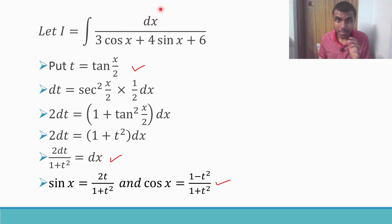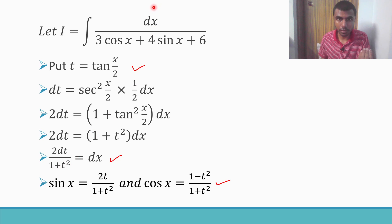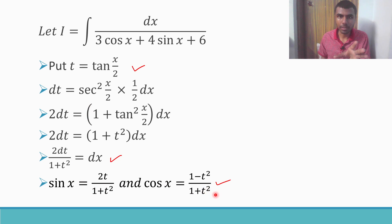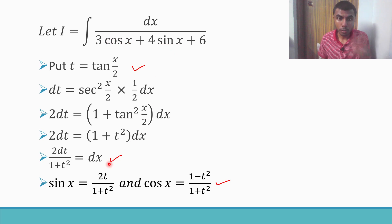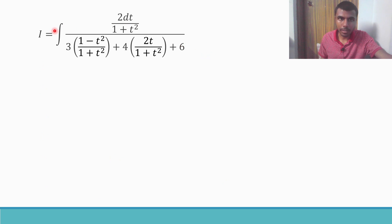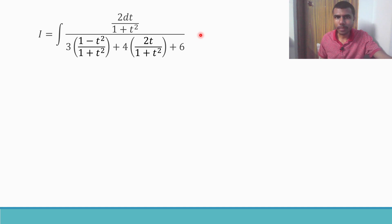Now let's substitute into the actual question. dx = 2dt/(1 + t²). cosx = (1 − t²)/(1 + t²), so 3cosx = 3(1 − t²)/(1 + t²). sinx = 2t/(1 + t²), so 4sinx = 8t/(1 + t²). So I becomes the integral of [2dt/(1 + t²)] divided by [3(1 − t²)/(1 + t²) + 8t/(1 + t²) + 6].